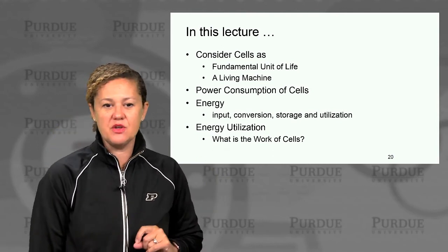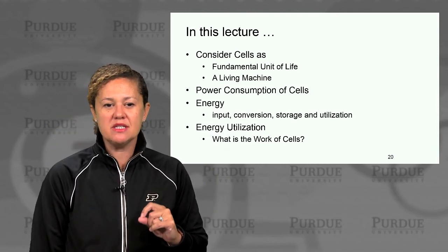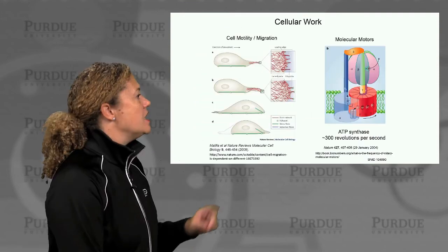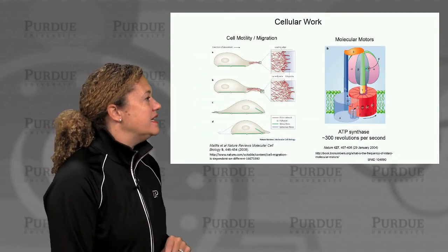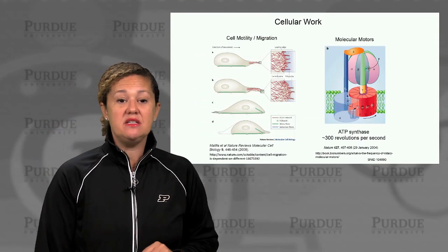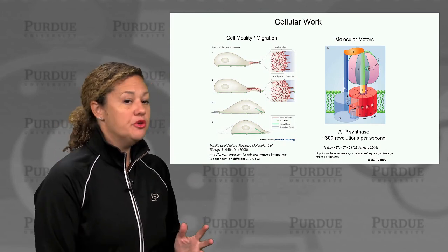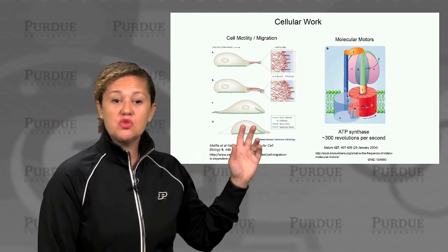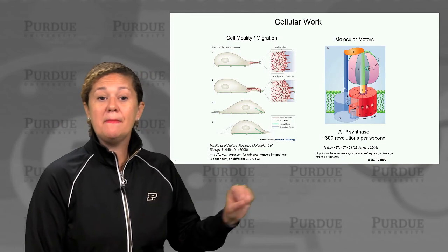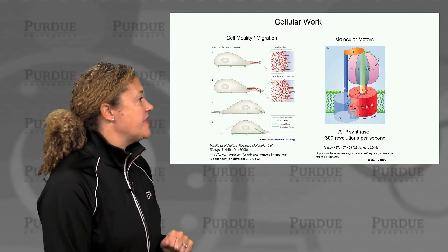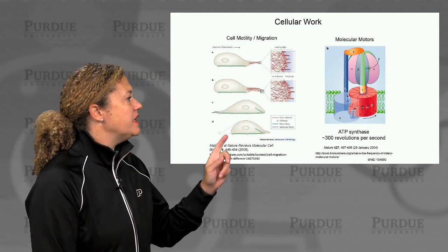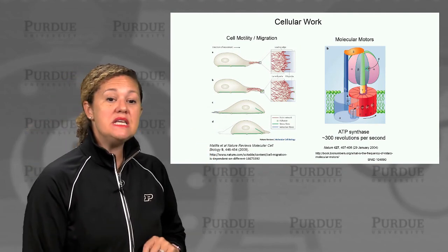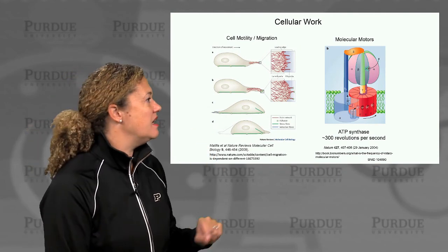What is the work that cells do, and how much power does that require for those jobs of the cell? One of the things that cells need to do, often, is to move. Cells will need to swim or migrate, depending on the type of cell and the environment they're in. Here's an example of actin-mediated migration of a cell.